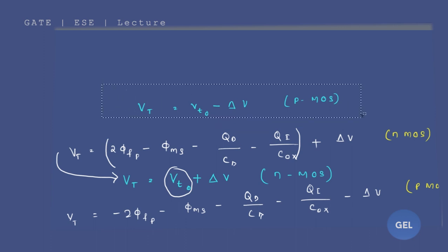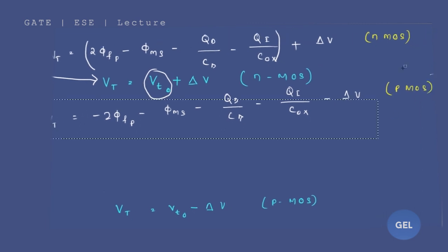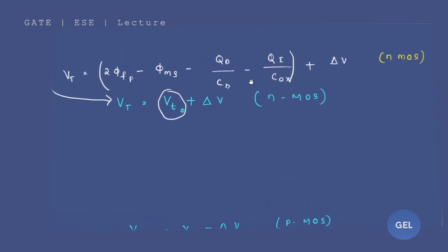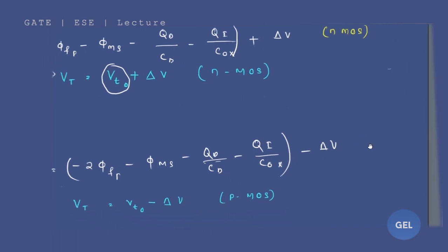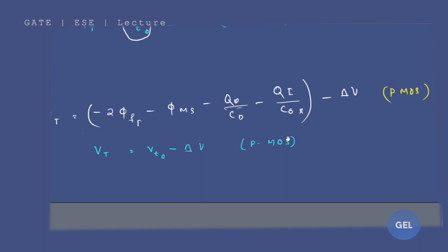I am really sorry, this is your overall VT. This term is your VT naught. If you add plus del V, that will give you threshold voltage. And for p MOSFET, you are going to have the same kind of formula. This is the value for p MOSFET: VT naught minus del V.